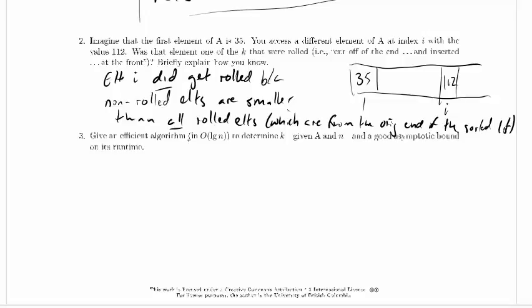Give an efficient algorithm in O to determine k given a and n and a good asymptotic bound on its runtime. We're going to find the roll point again but we're going to do better than we did with brute force. Even if we didn't have that hint, we've already got a linear time algorithm — we need to do better than linear time.